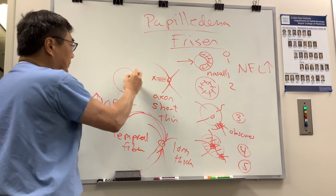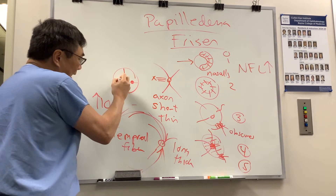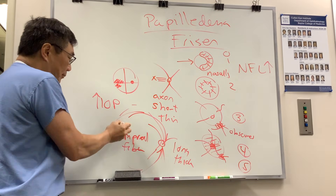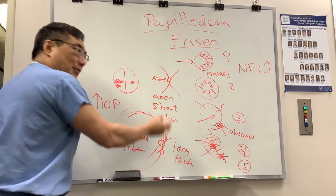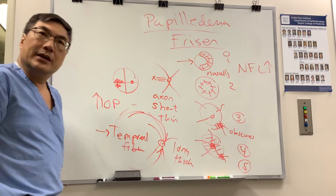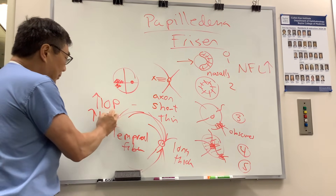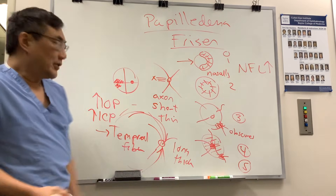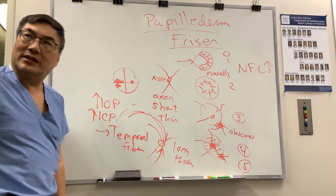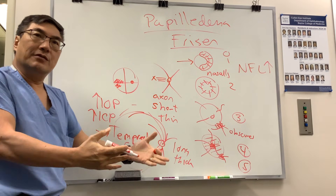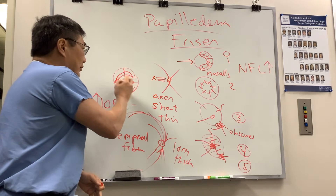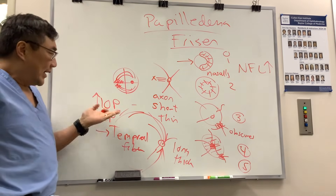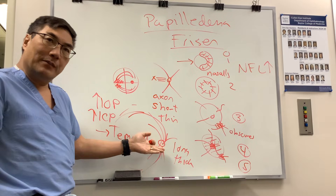The prototype for intraocular pressure elevation is glaucoma. When we have glaucoma, we get a nasal step as our first field defect — inferior or superior — because the temporal fibers are more pressure sensitive. With increased intracranial pressure, the same process occurs: the temporal fiber is involved, causing the exact same nasal step field defect. So arcuate and altitudinal field defects from either IOP or ICP result from preferential involvement of different fibers.